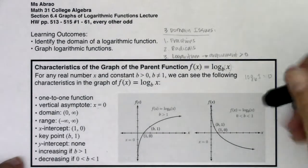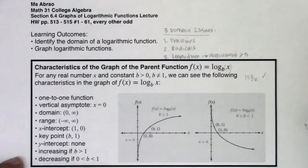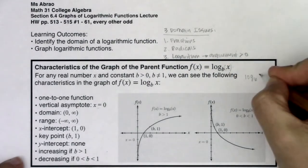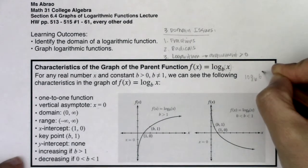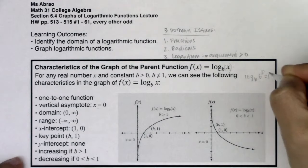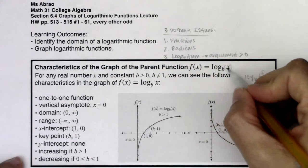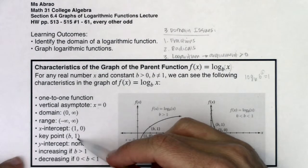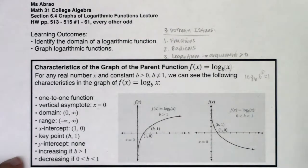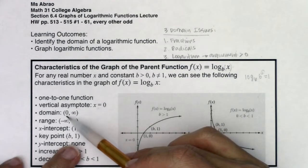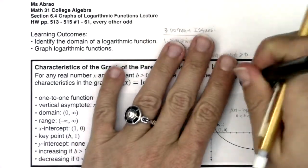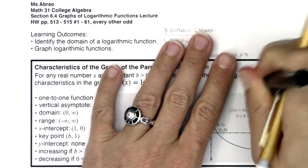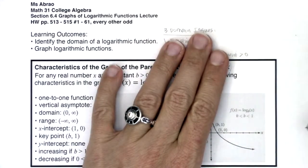A property mentioned in 6.3: when you plug b into your argument, when the base of your logarithm and the base of your power are the same, the only thing that survives is the exponent. So log base b of b equals one, and that becomes a key point on your graph. We don't typically have y-intercepts because zero is not in the domain. If you stretch and shift things you could have a y-intercept, but for your parent function, you don't have that y-intercept.